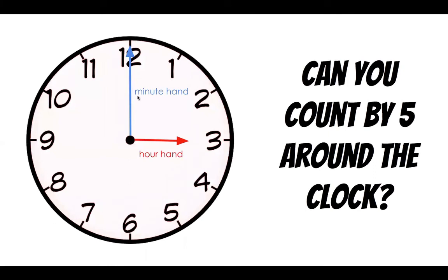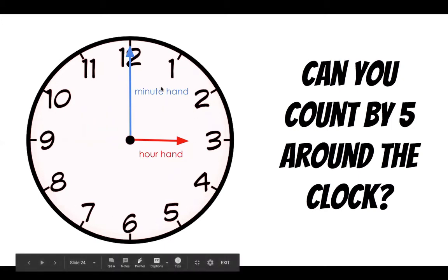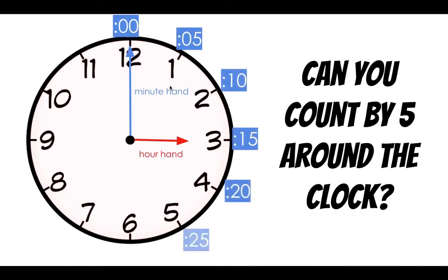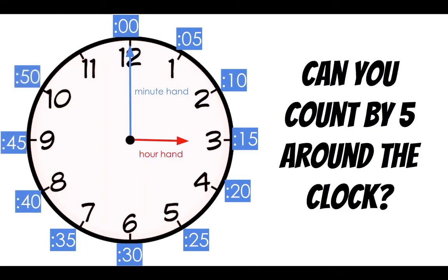Can you count by five? If you can count by five, you can count around the clock. We have our minute hand and our hour hand. These are the numbers for the hours. Now, we're going to count by five around the clock for our minutes. We start at zero, five, ten, fifteen, twenty, twenty-five, thirty, thirty-five, forty, forty-five, fifty, fifty-five. And we're back at the top, which would be 60 total minutes, which equals one hour.